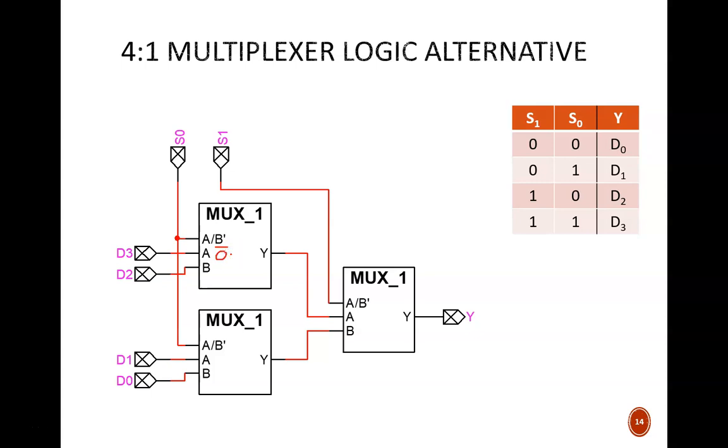To see how the setup works, let's use an example of selecting input D2. The SELECT bits need to read 1-0 for that selection. Be careful here. It is easy to fall into the trap of just writing 1-0 as the values for these inputs. We must carefully match the variable names between the table and the circuit. S1 should equal 1, and S0 should equal 0.